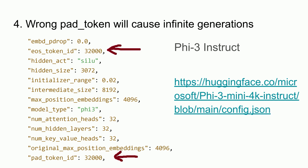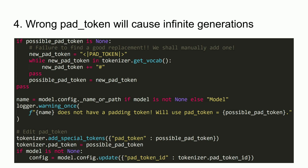The pad and EOS tokens must be different. In Unsloth, we fix this automatically — we check if there are any unreserved untrained tokens and select one as the pad token. If there are no untrained tokens, we add an extra pad token ourselves. Be careful not to add a pad token that already exists in your vocabulary — we check existing tokens and add extra hashes to create a new unique pad token.